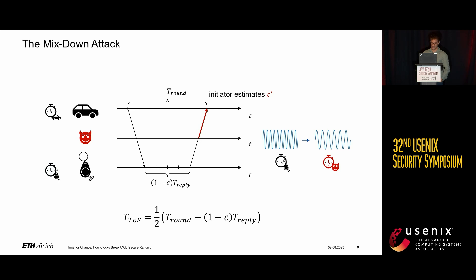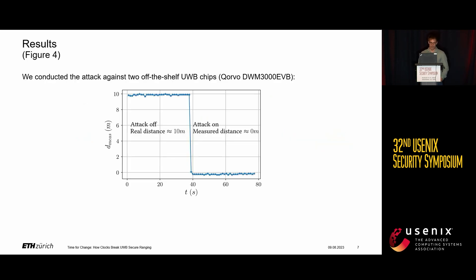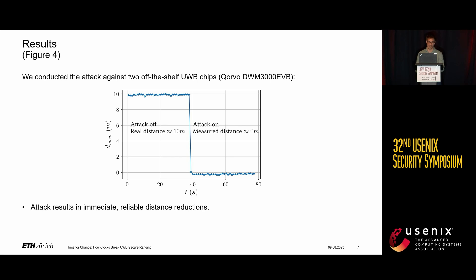We tested this in practical attacks against off-the-shelf chips — not real cars and key fobs, but chips on device boards placed about 10 meters apart in our lab. At the 40-second mark when we start the attack, we get immediate and reliable distance reductions. Under lab conditions, it's possible to achieve nearly 100% success rate, as all the attacker needs is to convince the chip to lock to its own signal using its power advantage.